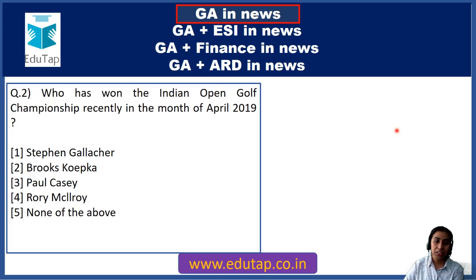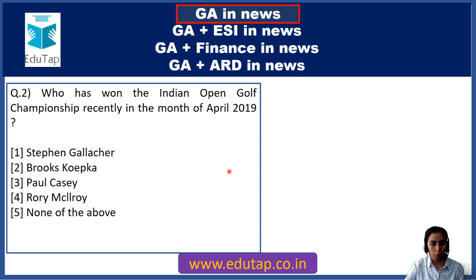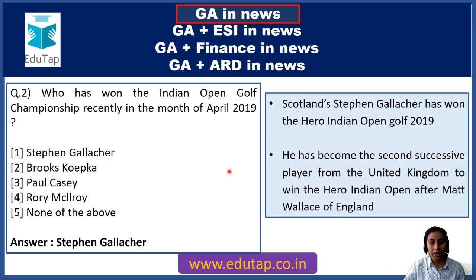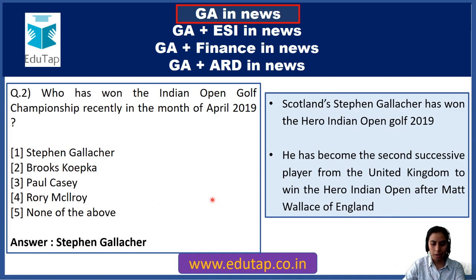Question 2: Who has won the Indian Open Golf Championship recently in April? The options are Stephen Galacher, Brooks Koepka, Paul, Rory McIlroy, or none of the above. The answer is Stephen Galacher. He is from Scotland and has won the Hero Indian Open Golf Championship of 2019. He is the second successive player from the UK to win this Hero India Open Championship after Matt Wallace of England.